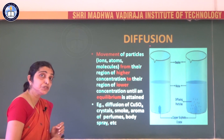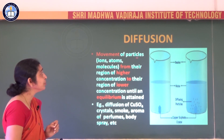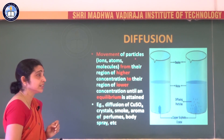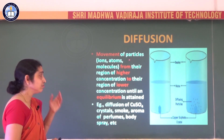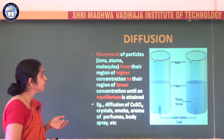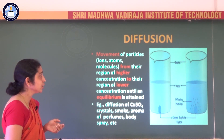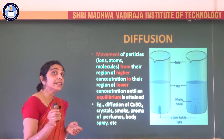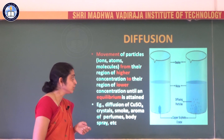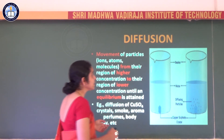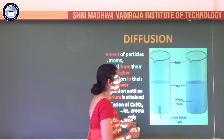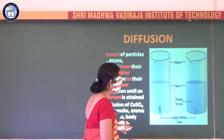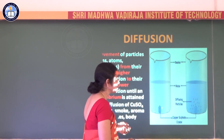So what is diffusion? Diffusion is the movement of particles — ions, atoms, or molecules — from the region of higher concentration to the region of lower concentration until an equilibrium is attained. Where the concentration of copper sulphate is more, the molecules gradually diffuse and spread in all directions until equilibrium is attained.